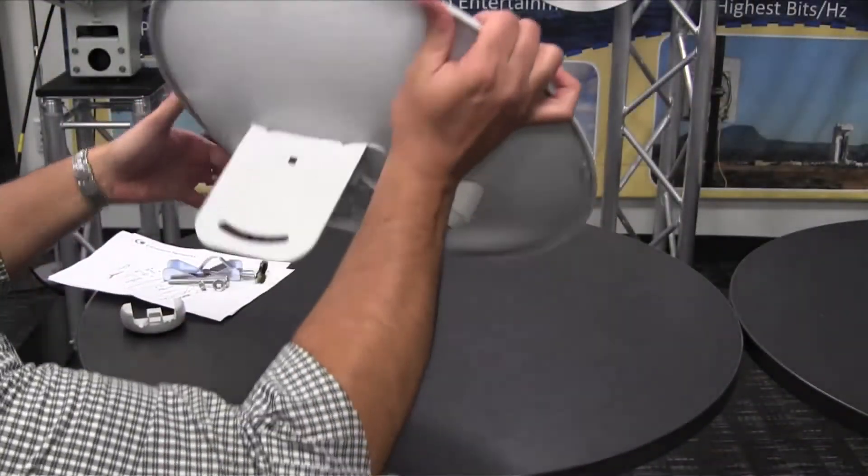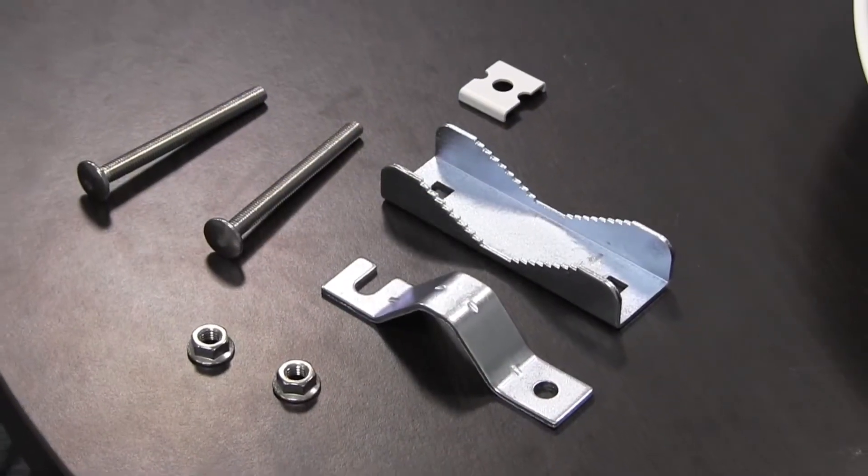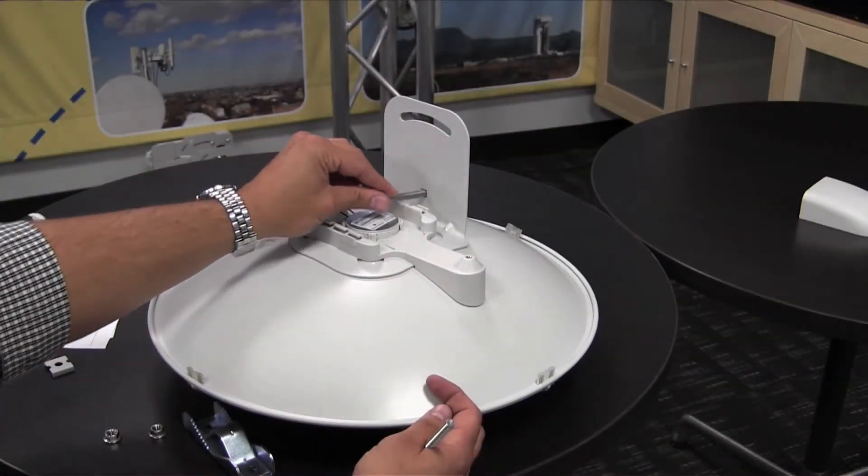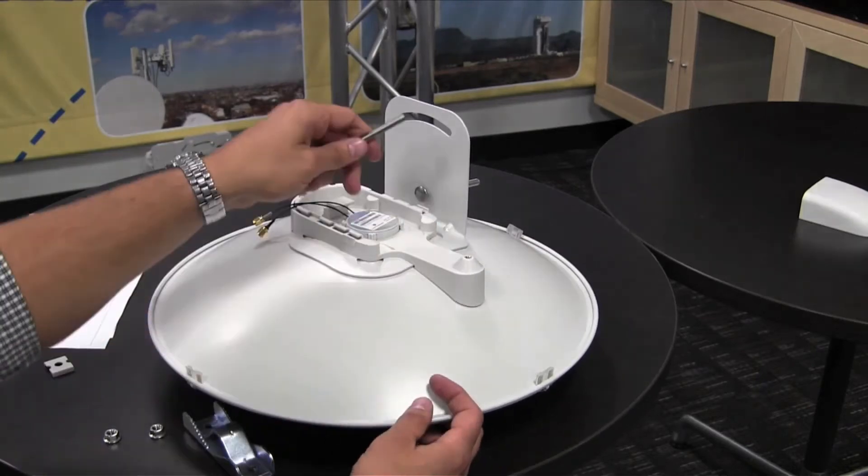Flip the dish over again to install the mounting bracket hardware. Insert one bolt into the bottom hole and one bolt into the top slot.